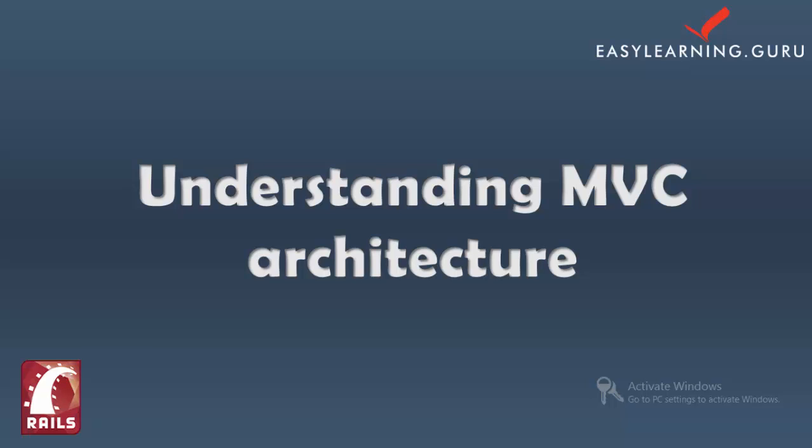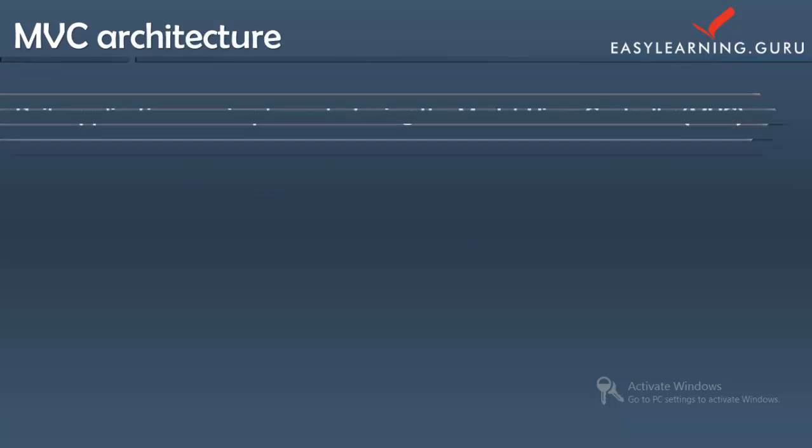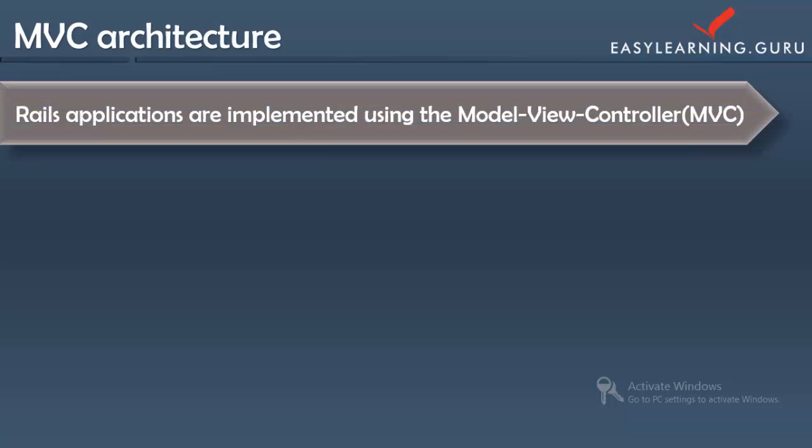It's a fundamental aspect of Rails that's important to understand right from the start. So we have M, V, and C, where the M basically stands for Model, the V stands for View, and the C stands for Controller.